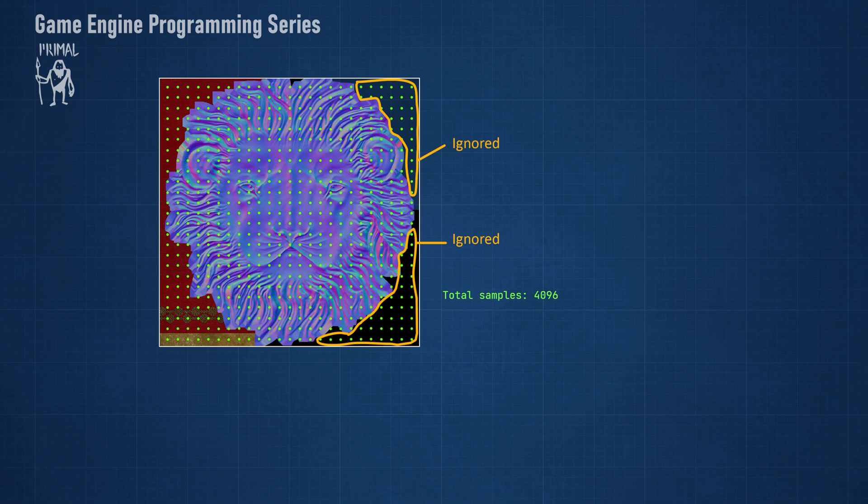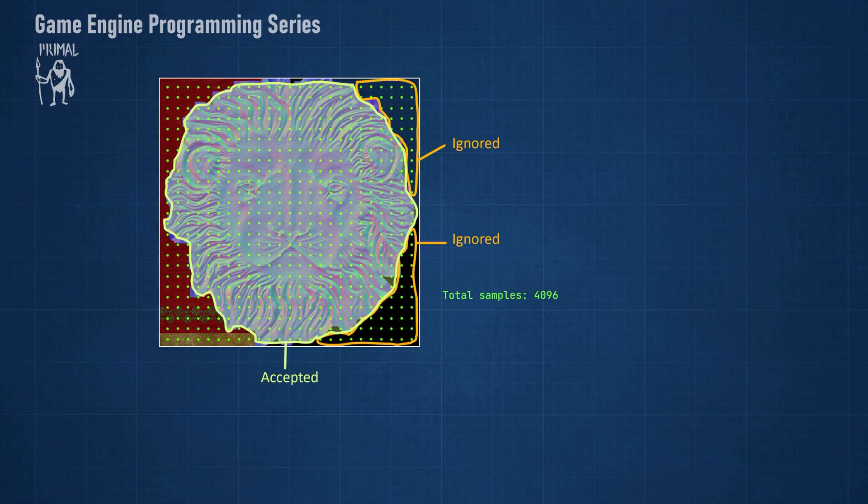If the vector's length is larger than this threshold, we count the sampled pixel as an accepted sample. Moreover, we'll accumulate the color of all accepted pixels in order to compute the average vector length later on. If the sampled vector length is less than the threshold, we'll count it as a rejected sample.